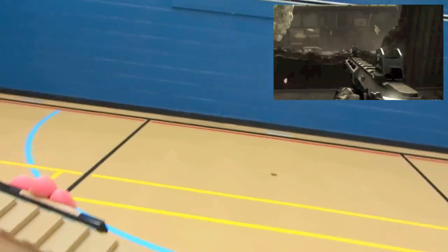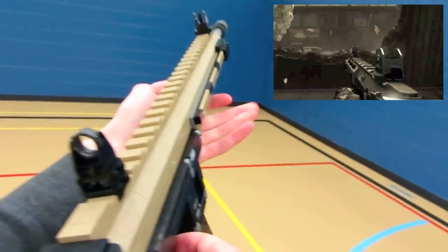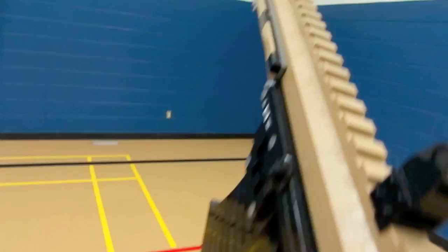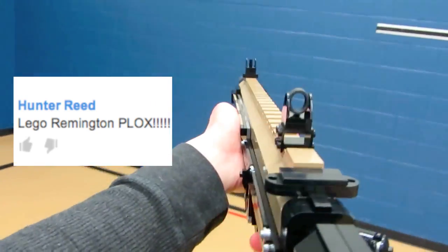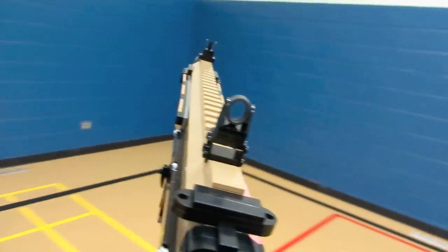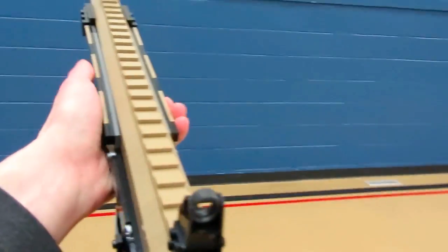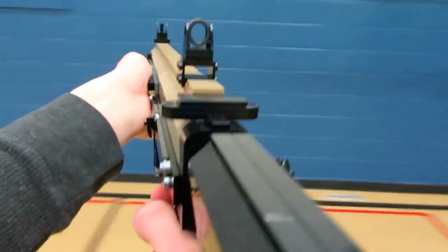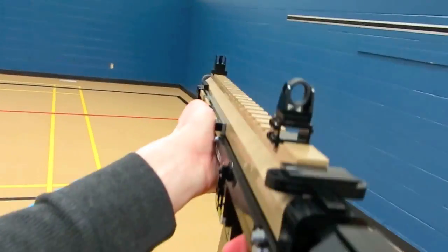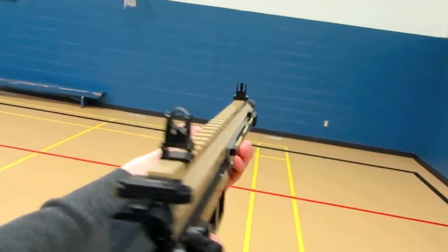So there you have it, the Remington R5 assault rifle brought to life on a life-size scale with Lego bricks, a much requested weapon. Let me know in the comments which Call of Duty ghosts or just any weapon you want to see built from Lego. As always thank you guys for watching my videos and I'll see you guys in another video with another creation.